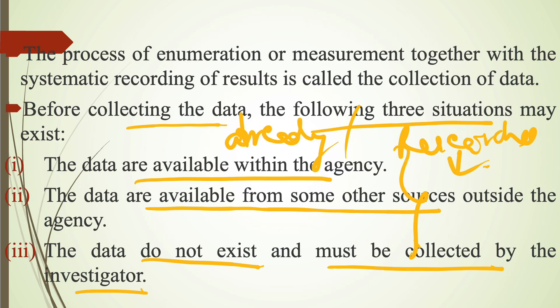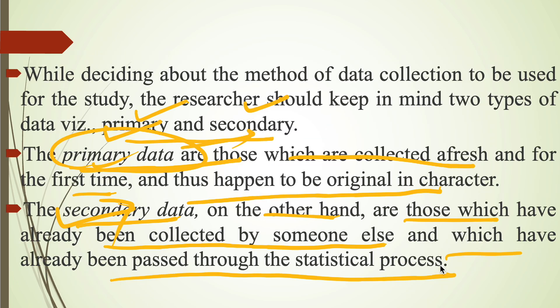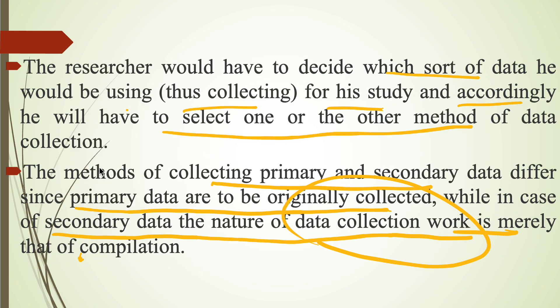The three main situations before data collection are: data available within the agency, data available from outside sources, and data that must be collected by the investigator. There are two types of data — primary and secondary. Primary data is original, collected for the first time by the researcher, whereas secondary data is already available and must be compiled from offline or online sources. The researcher decides which type of data is needed and works according to that data collection method.